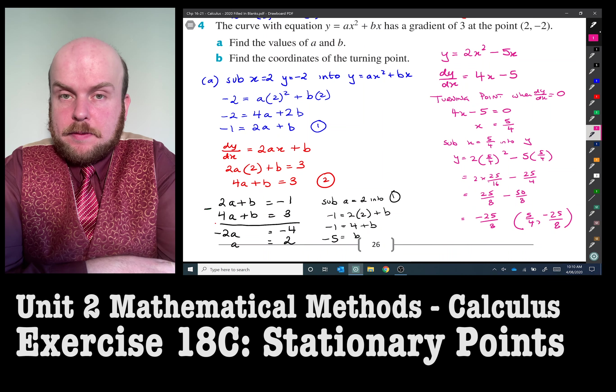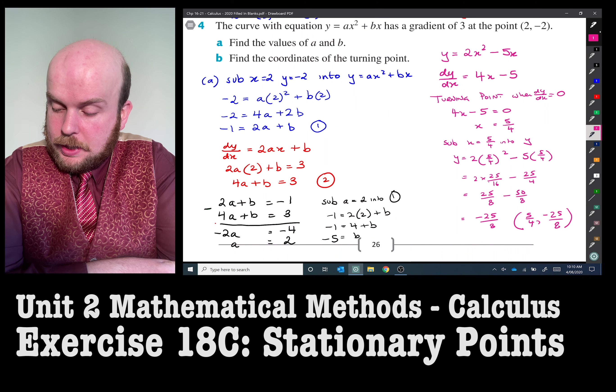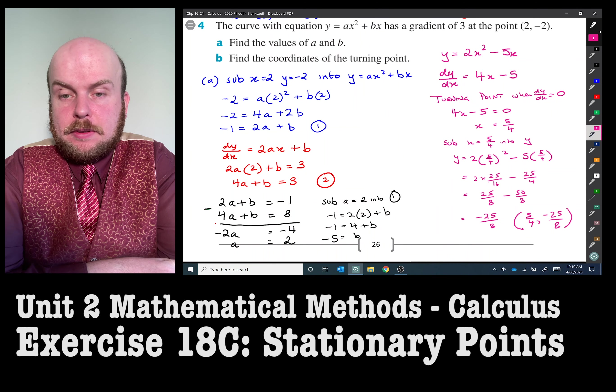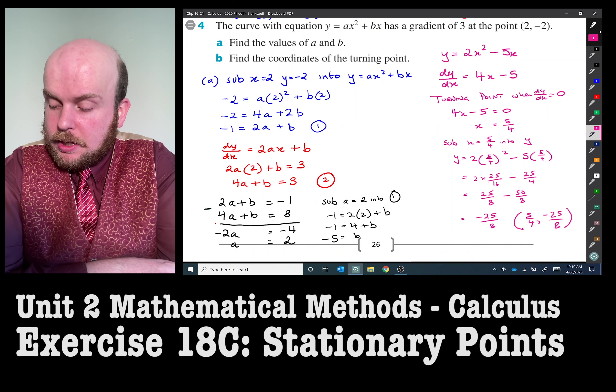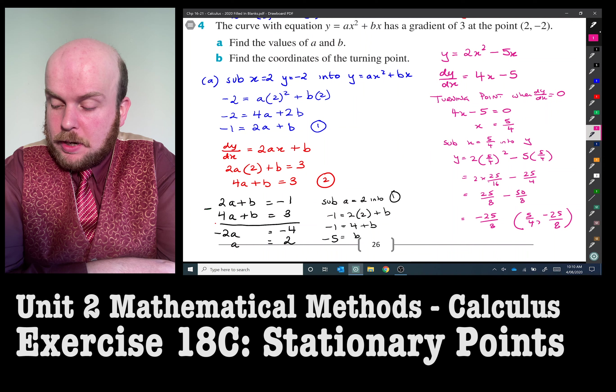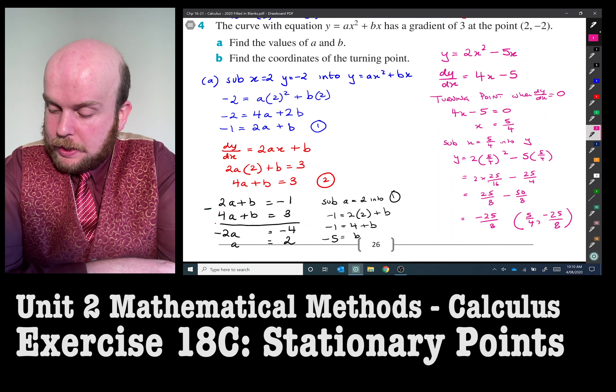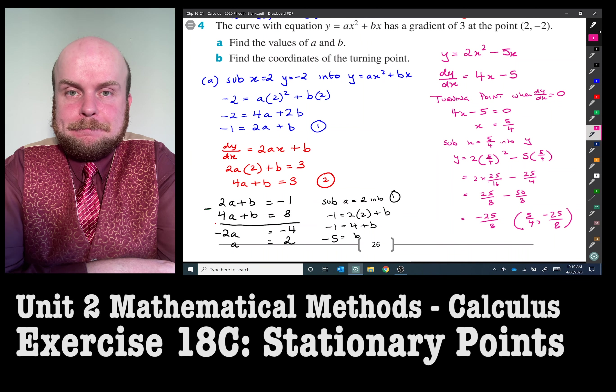And so there is our derivative and there is our turning point. We found that the turning point for this equation is when x equals five quarters. I found that by making the derivative equal to zero, then all I had to do was to substitute that back into the original equation and that got me 5/4 and -25/8.